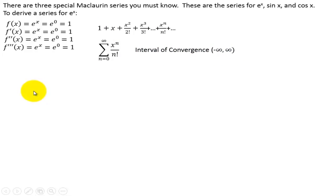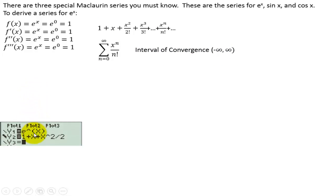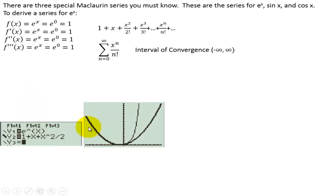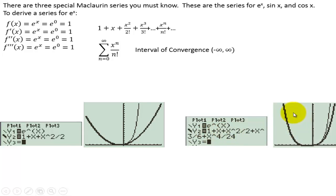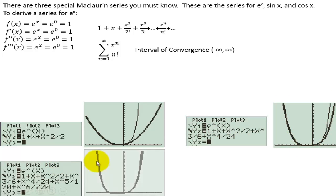The interval of convergence is negative infinity to infinity. So eventually, if you add on enough terms, the estimate just keeps getting better and better, because it will converge to the actual curve of e to the x eventually if you add on enough terms.